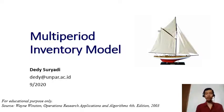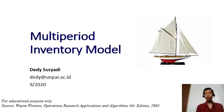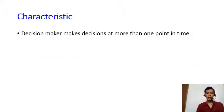What we've seen so far are the problems that happen on a single period, like a day or a week, or we assume that there is no significant change between one period to the other. In this video, I'm going to talk about an inventory model in which there is a significant change from one period to the other. Due to these changes, the main characteristic of this multi-period problem is that the decision maker needs to make decisions at more than one point in time.